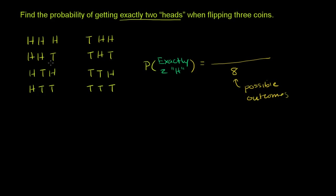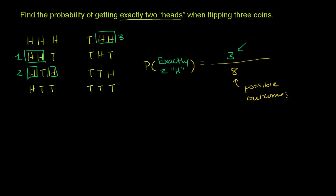So let's think about exactly two heads. This first outcome is three heads, so it's not exactly two heads. This one is exactly two heads. This one is exactly two heads. There's only one head here. This one is exactly two heads. This one has only one head, this one only one head, this one no heads. So you have one, two, three of the possible outcomes associated with this event — three outcomes satisfy this event.